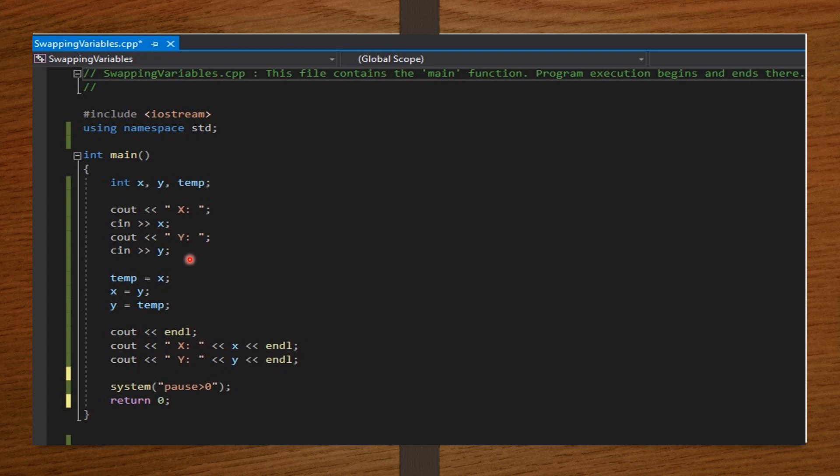After that, we ask the computer to display y colon. And then cin y, the user should input the integer value of y. Now with the x and y values from the user, we say temp equals x, x equals y, and y equals temp. This code here will ensure the swap.